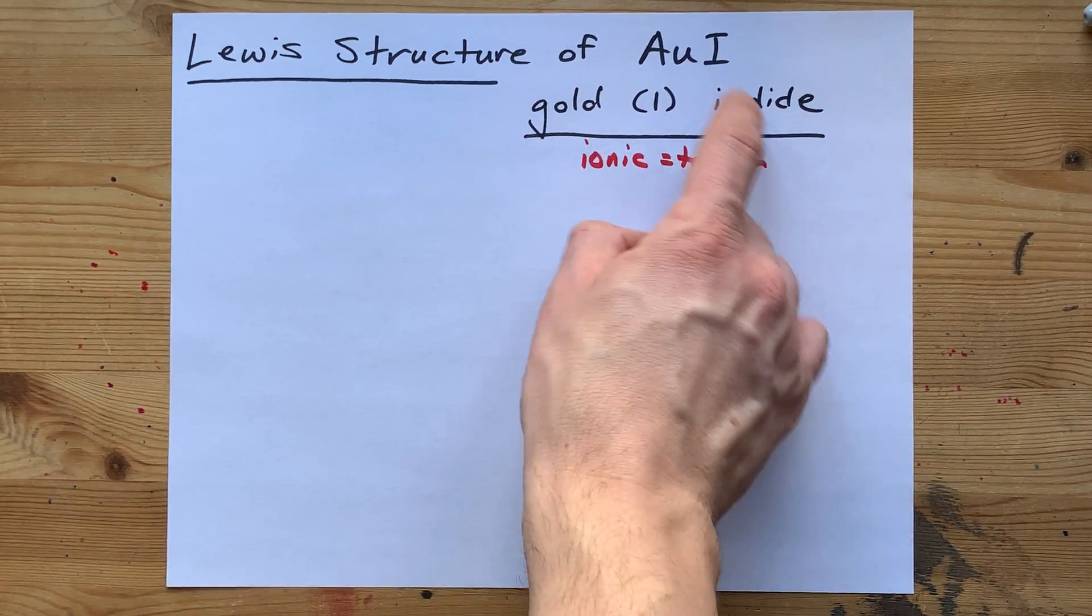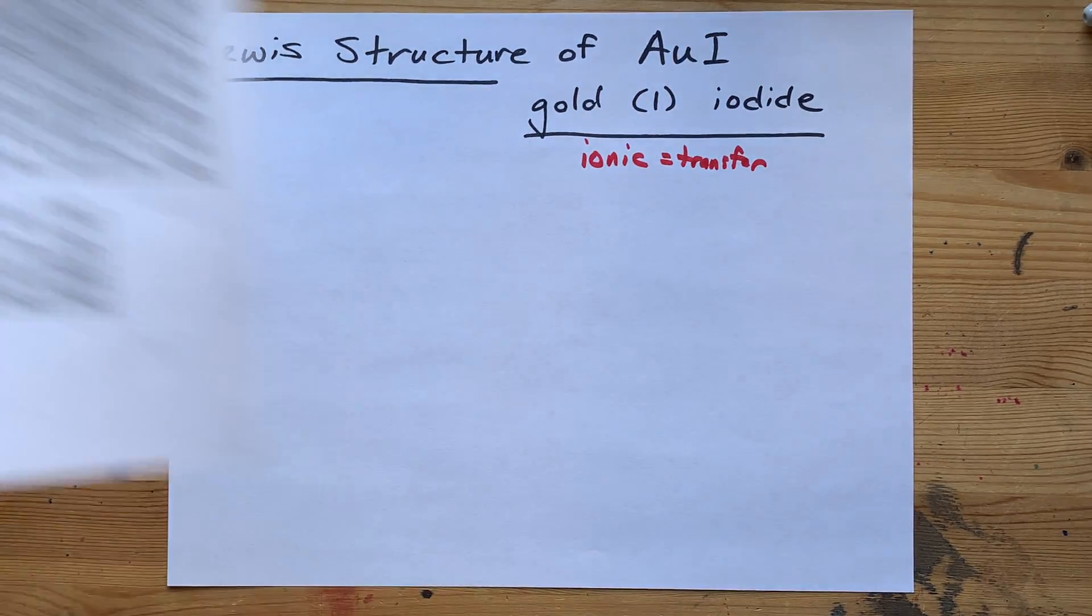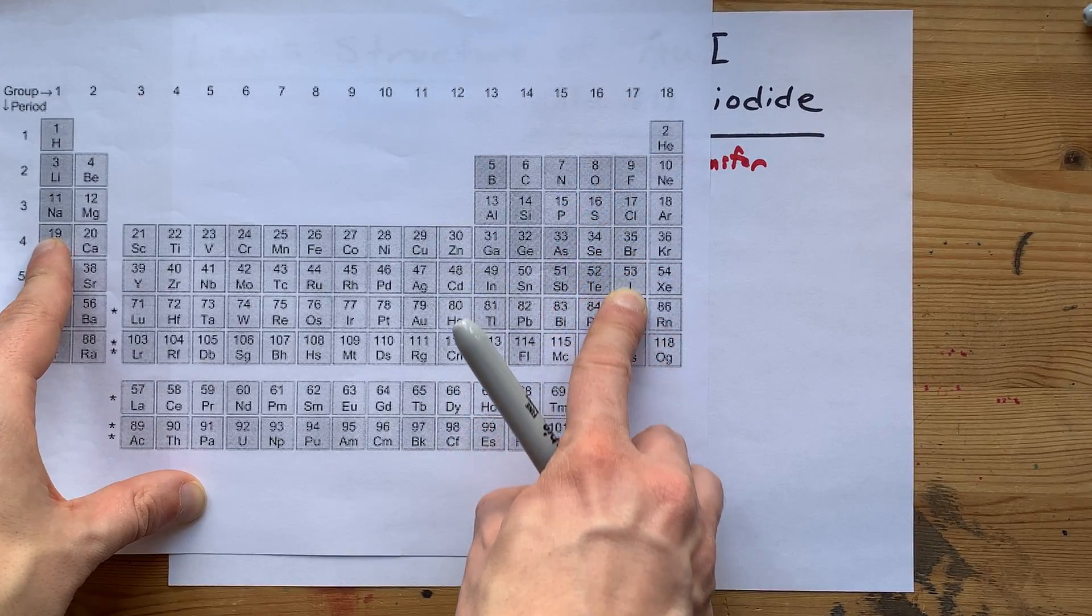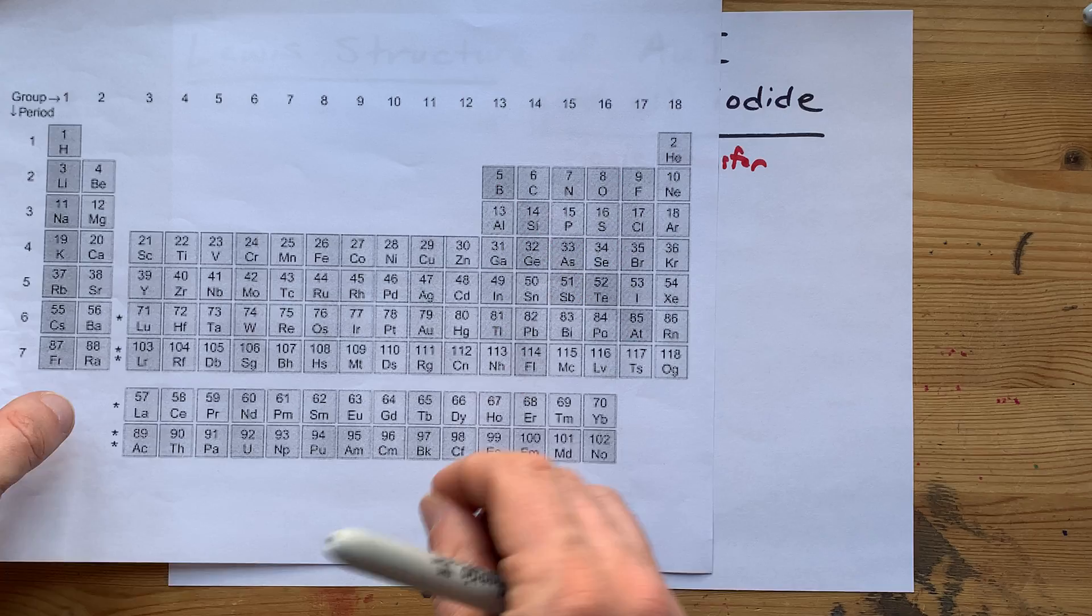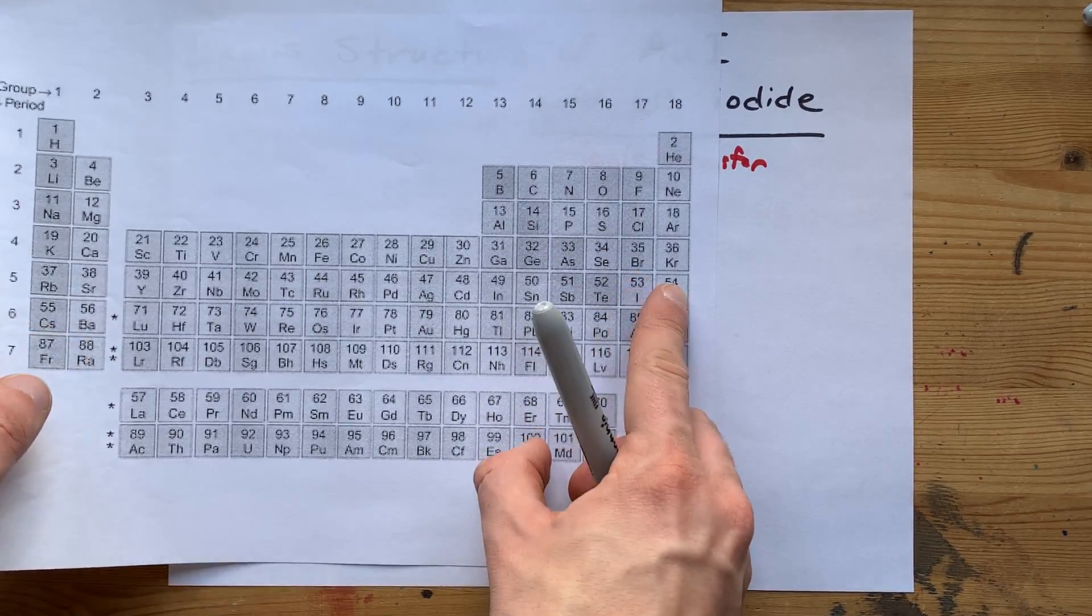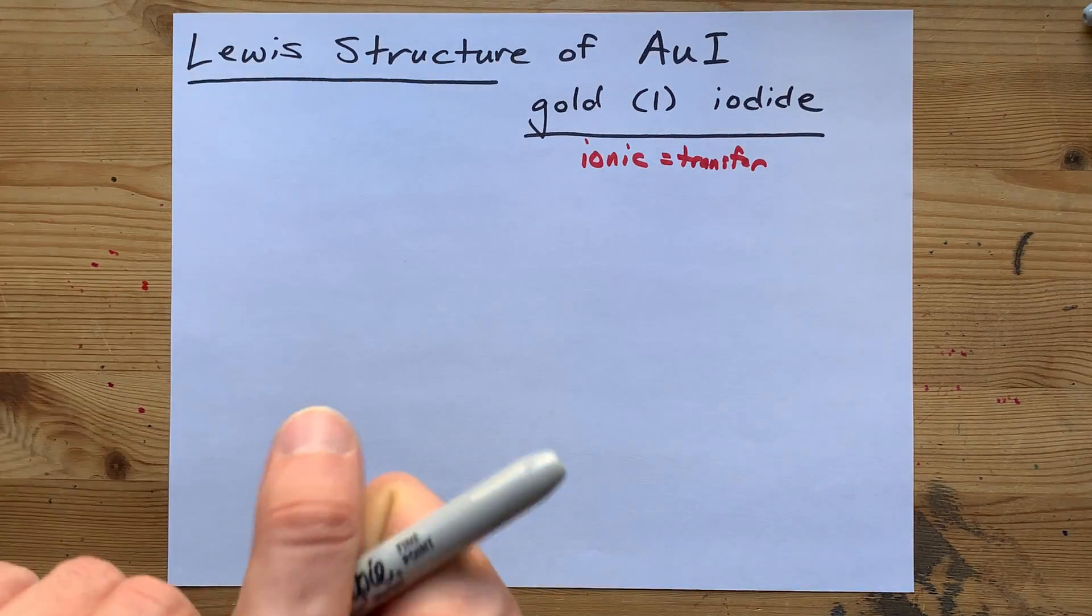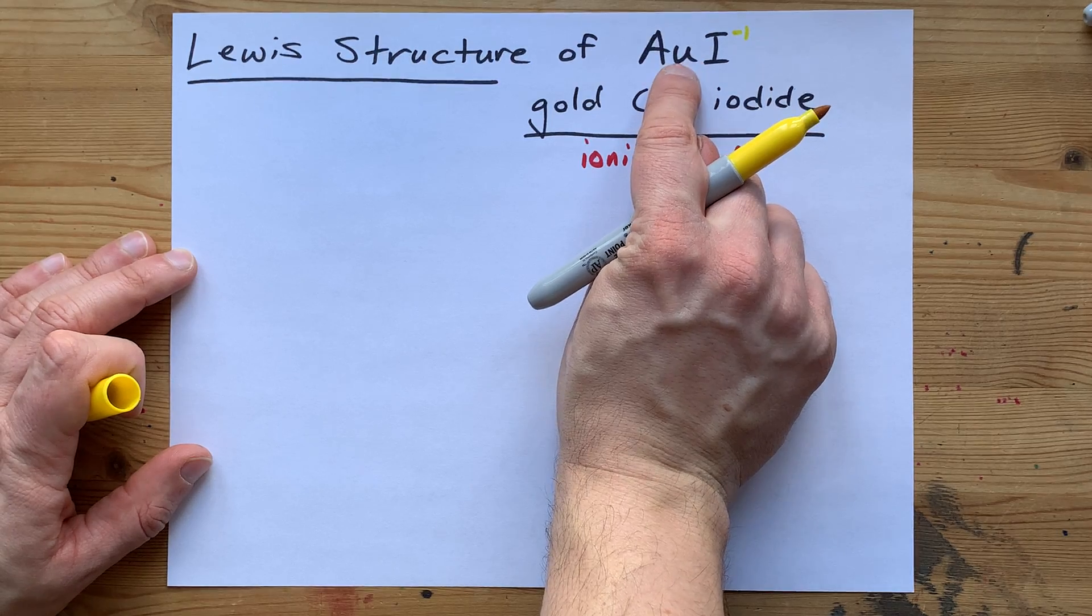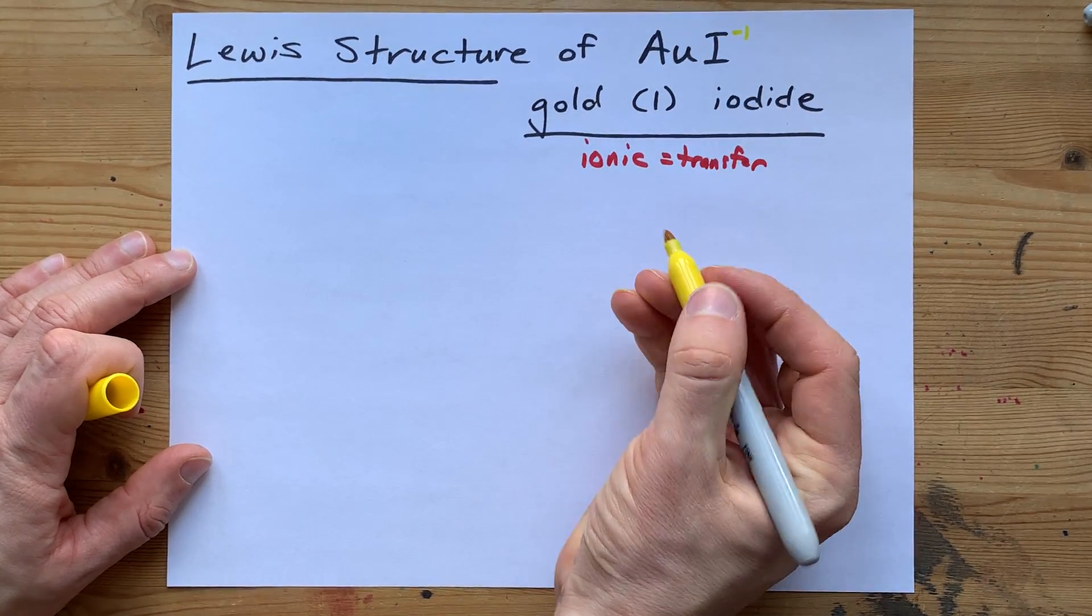But if you're not given the name and you're given just the formula, I want to point out that here, these atoms, the halogens, want a charge of minus 1. That's because they're one electron away from becoming a noble gas. And so if iodine wants a charge of minus 1, what charge does gold want to cancel that charge out?